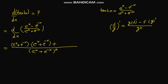Then in the formula we also have e to the power x minus e to the power negative x, times the derivative of e to the power x plus e to the power negative x, which gives us e to the power x minus e to the power negative x. Now we simplify this expression.